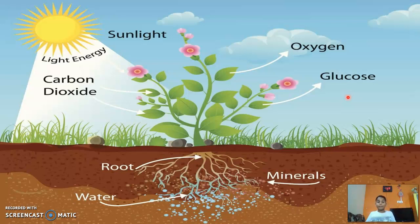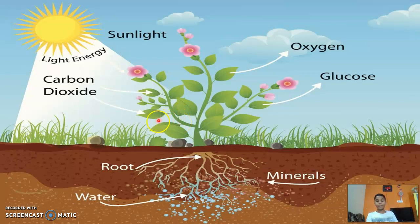Photosynthesis occurs when a plant has sunlight and water in the presence of carbon dioxide and the green pigment chlorophyll. This process happens in the green leaves. The inputs are sunlight plus water plus carbon dioxide plus chlorophyll, and the outputs are glucose plus oxygen.